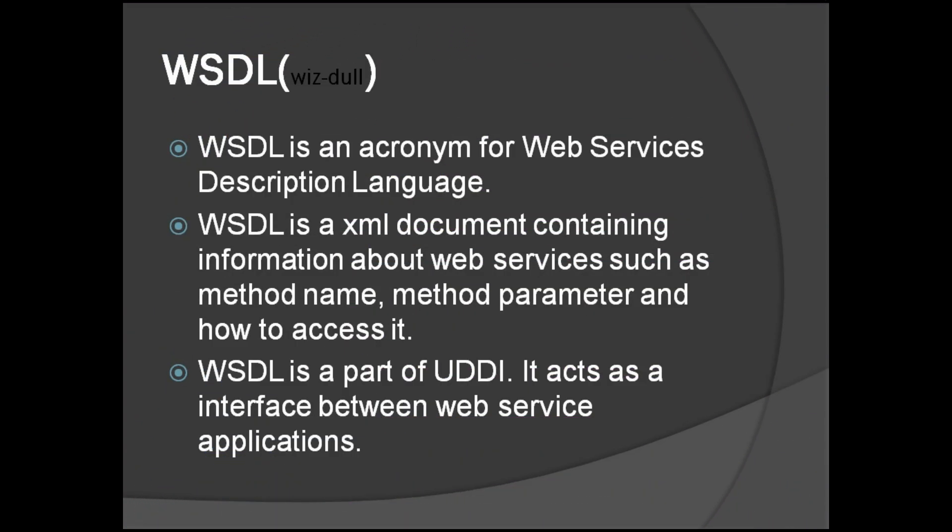Hello friends. Let's see another concept called WSDL. In the last video I gave information about what is a web service, the different types of web services, how they work, and SOAP — Simple Object Access Protocol. Now let's see one more component: WSDL, which is an acronym for Web Services Description Language. It is an XML document containing information about web services such as method name, method parameters, and how to access it. All of this will be there in WSDL.